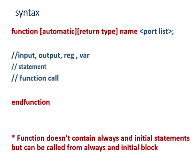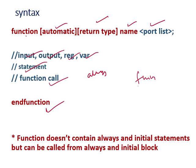The syntax is: 'function', then 'automatic', then return type, then function name, then port list, then 'end function'. Inside the function you can have input, output, reg variables, any kind of variable, then statements, then a function call — because you can call a function from another function. A function cannot contain 'always' or 'initial' blocks inside it, but from 'always' and 'initial' blocks you can call a function.